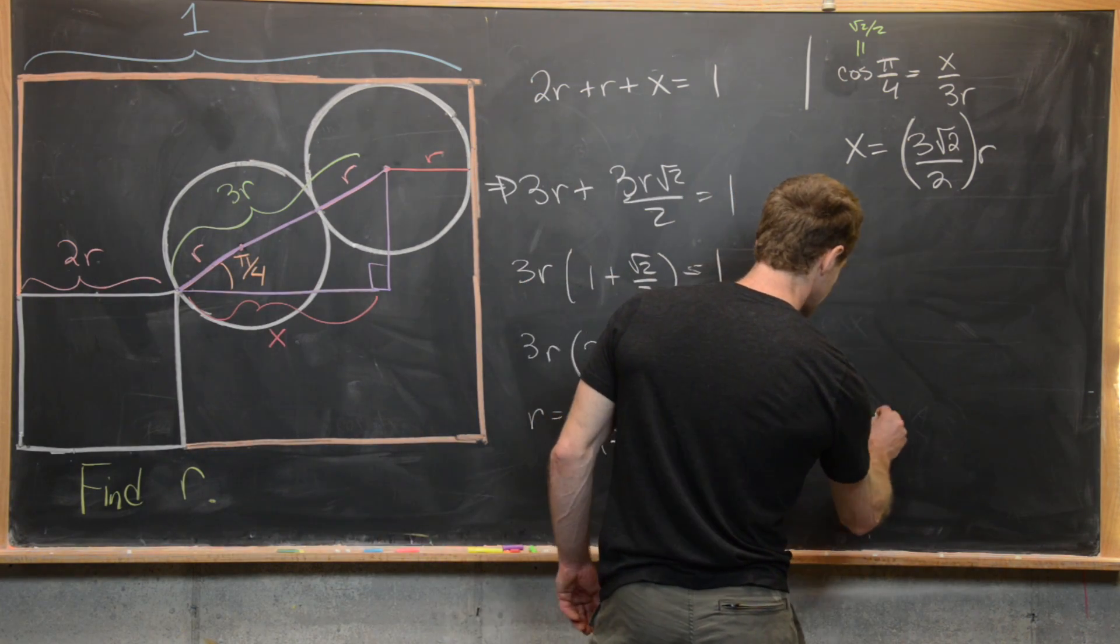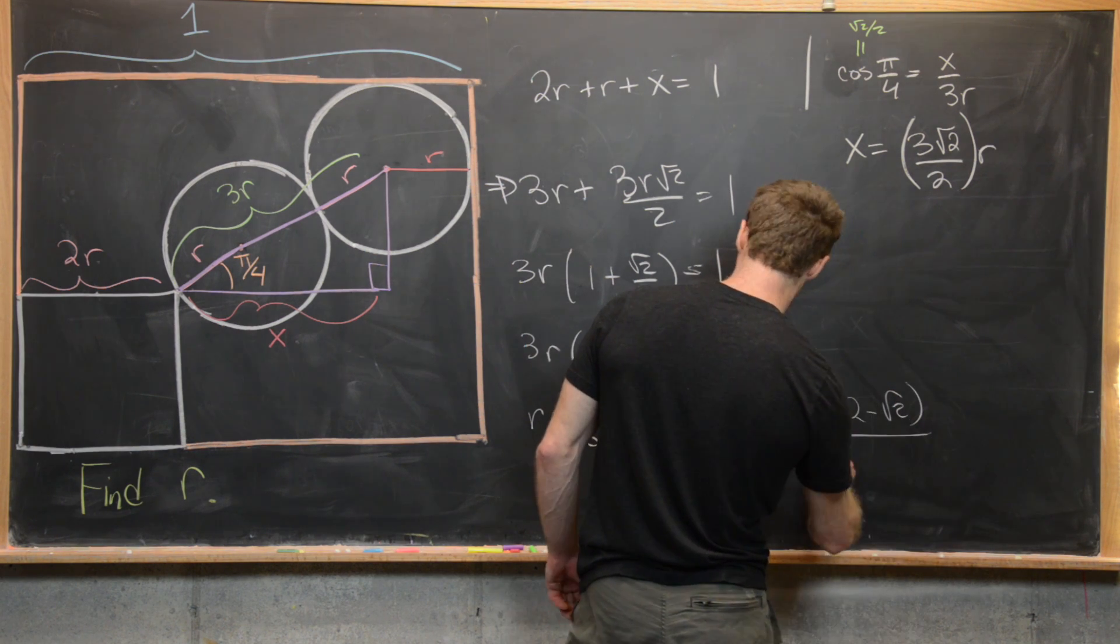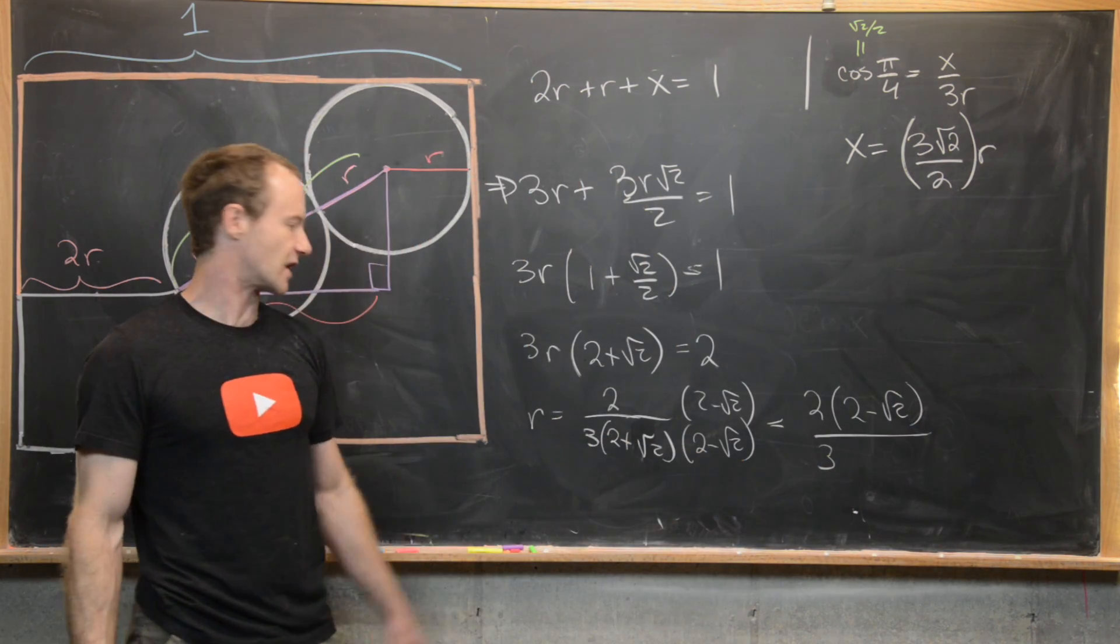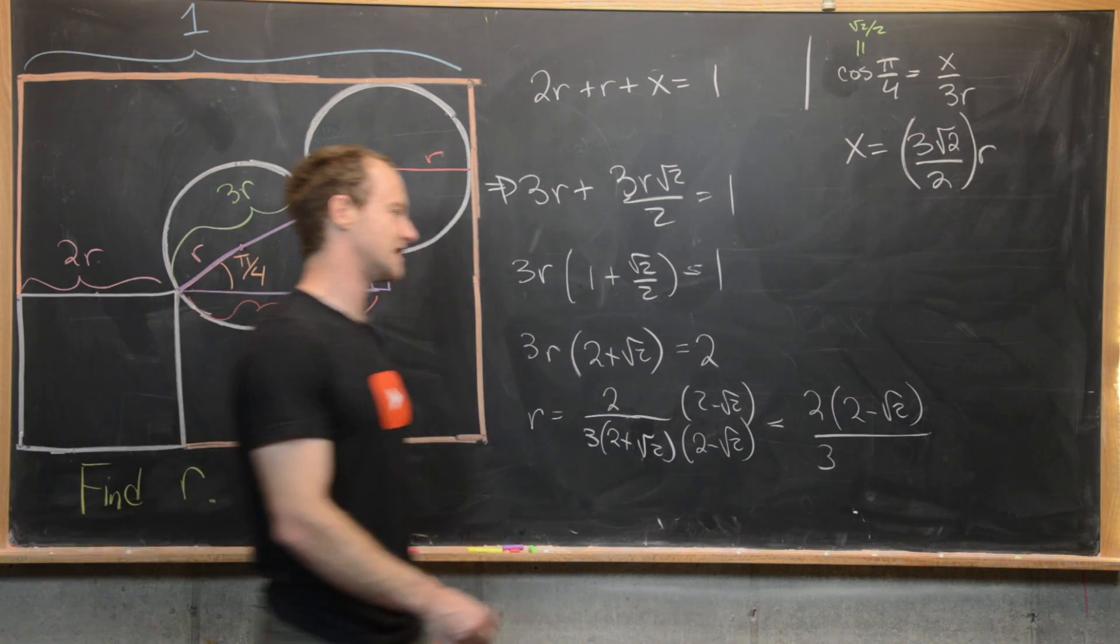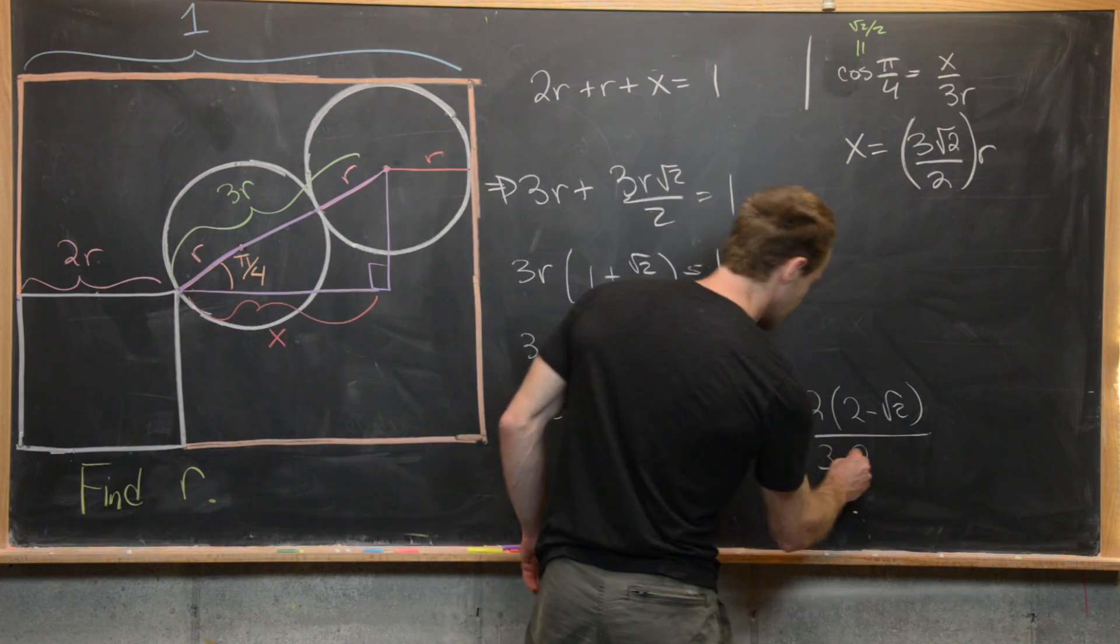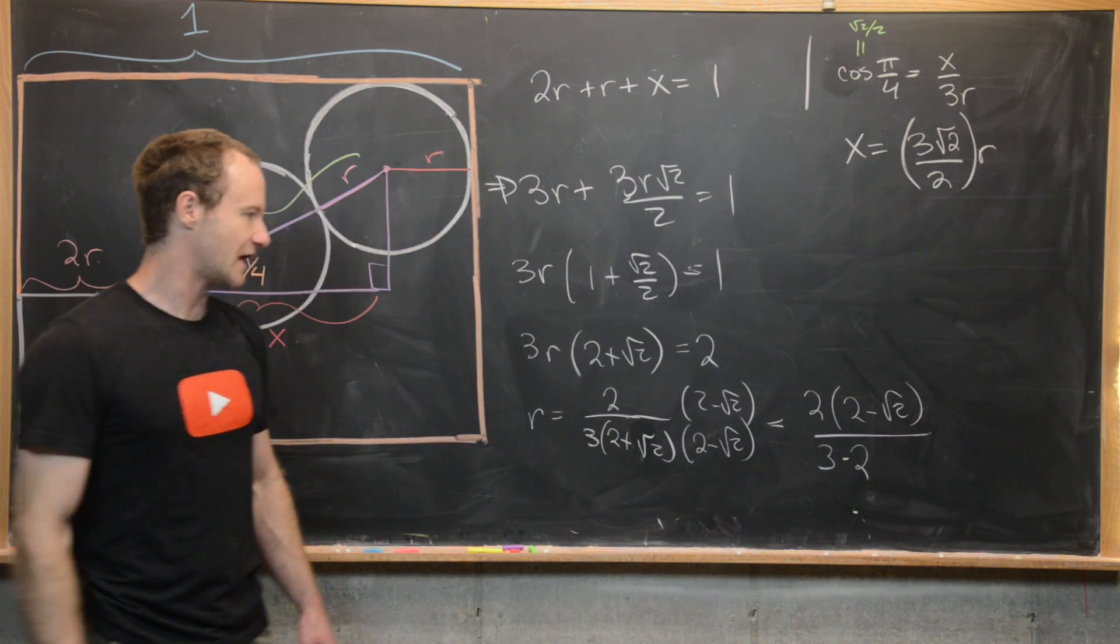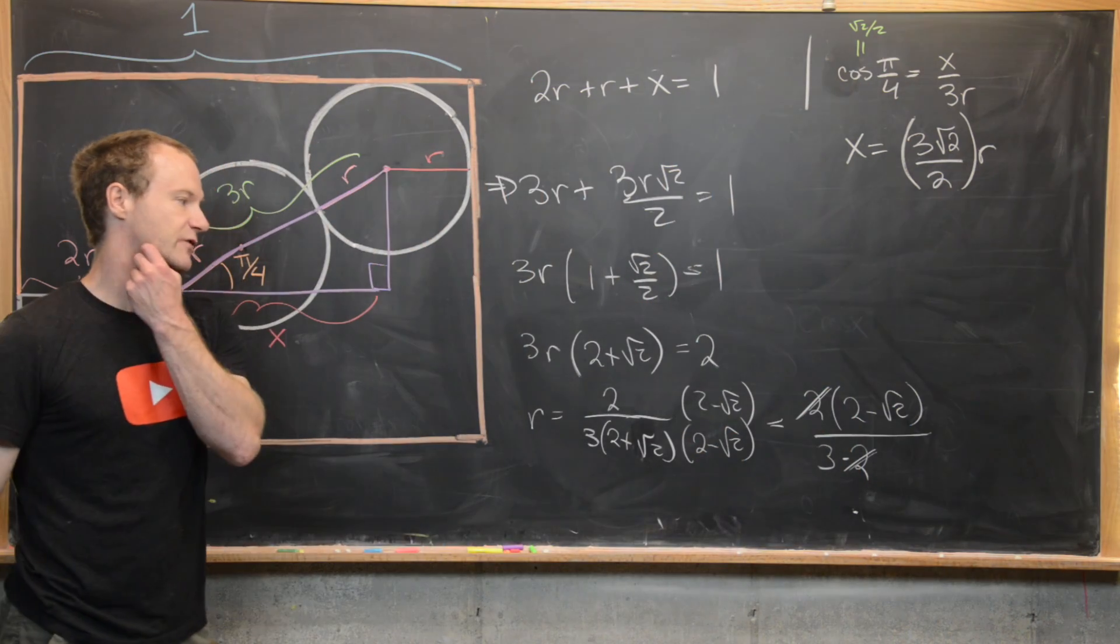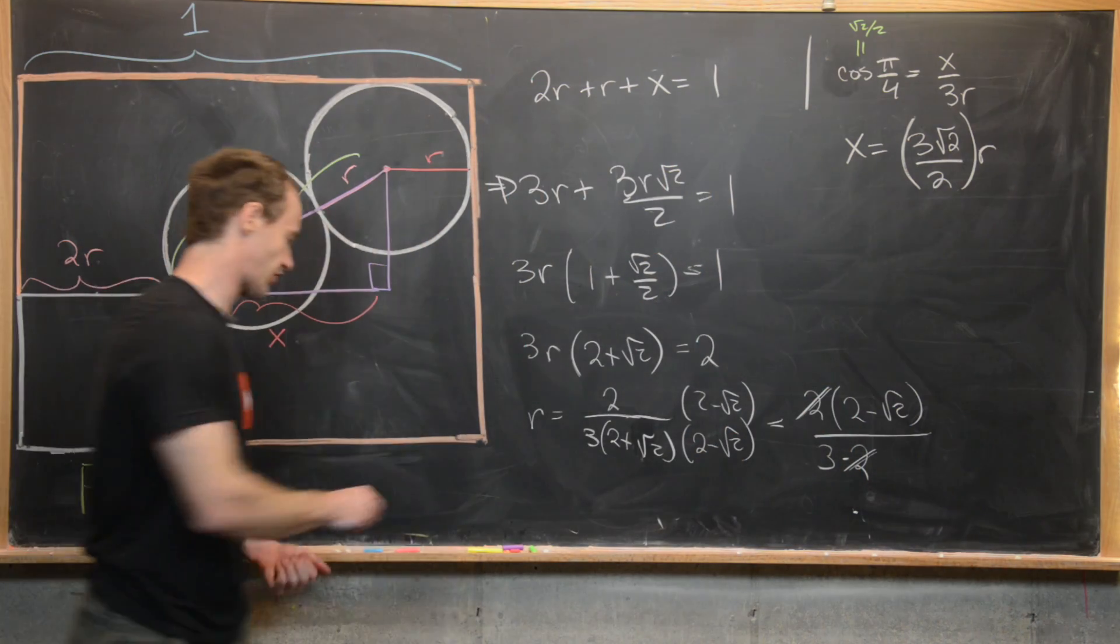That's going to give us 2 times (2 minus √2) over 3 times, so we'll have a difference of squares. So it's going to end up being 4 minus 2, which is 2. So we've got 3 times 2 in the denominator. Those 2s can obviously cancel, and we're left with (2 minus √2) over 3.